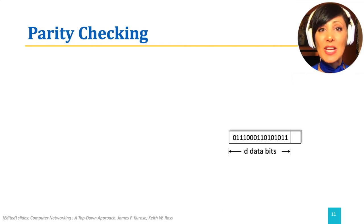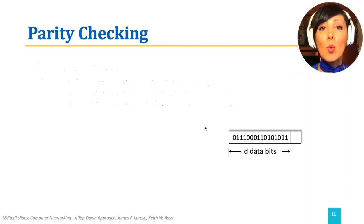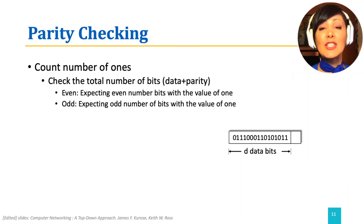One of the simplest ways of checking for errors is using a parity bit. Parity checking validates a certain number of bits with the value of one in the total number of bits. If we have d data bits and one parity bit, the entire d plus one bits are checked for a certain number of ones.